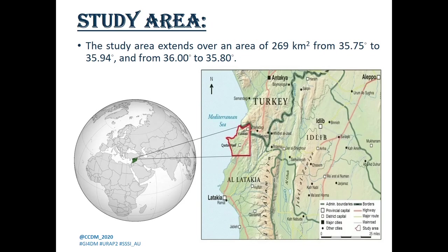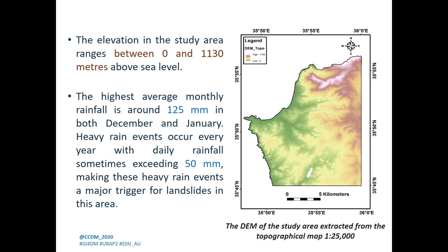The study area extends over an area of 269 square kilometers in northwest Syria next to the Turkish border. The highest elevation is 1,130 meters in the mountain in the north, and the daily rainfall in December and January sometimes exceeds 50 millimeters, making these heavy rains a major trigger for landslides in this area.